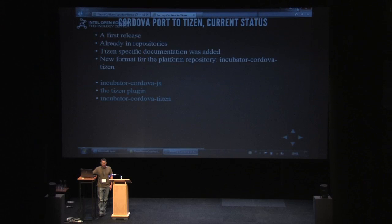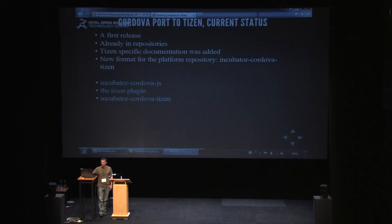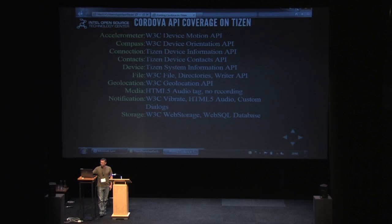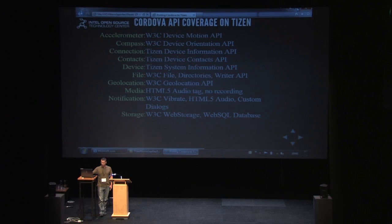What is the current status? We have a first release that is already in the repositories of Apache and GitHub. The Tizen-specific documentation was added, and we follow the new format for the platform repository, which is incubator-cordova-tizen. Hereafter, you have a few links to the repositories. You can see the coverage of the API on Tizen — using sometimes W3C API, sometimes Tizen device API, and sometimes HTML5 API.